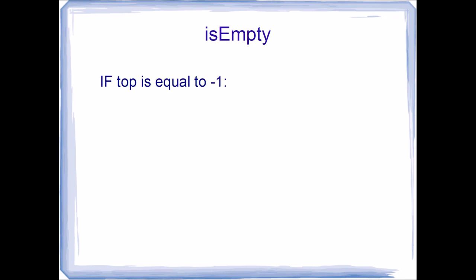Let's examine the algorithms, starting with is_empty. Is_empty is a very simple algorithm that executes in constant time — O(1) — because it does not depend on how big the array is or how many values are inside the stack. All we do is check if top is equal to negative one. If it is, return true, indicating the stack is empty. If top is anything other than negative one, return false, because top is pointing to a valid array index meaning there are values stored in our stack.